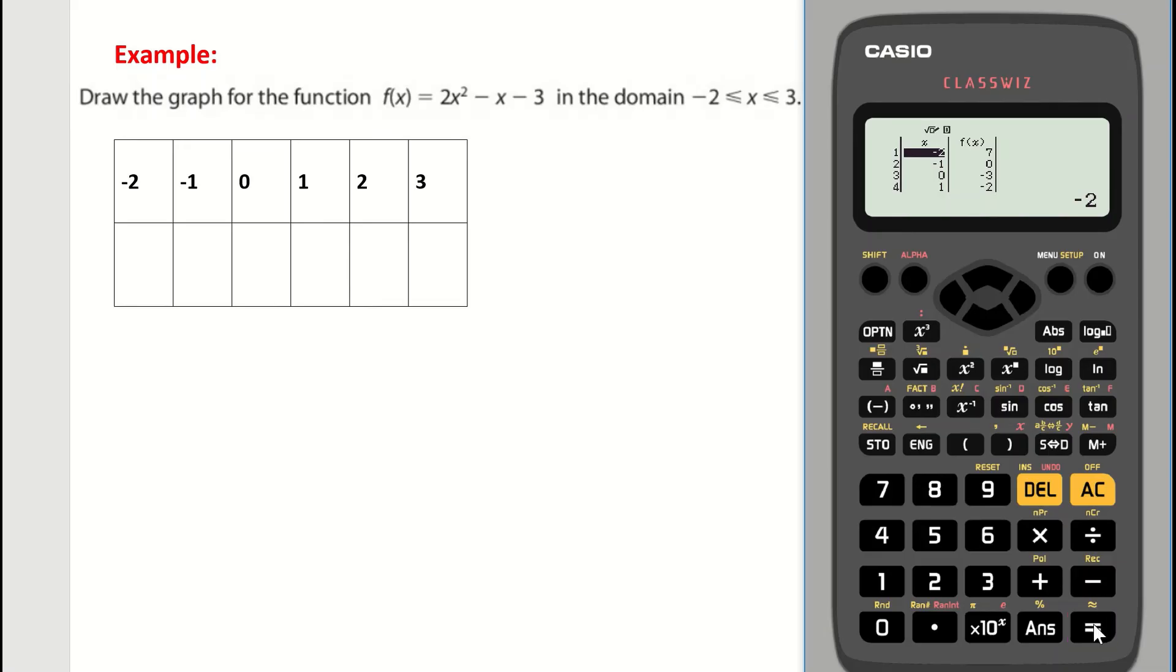So here you can see all of my answers. So my input of -2 corresponds to an output or a y value of 7. -1 corresponds to 0. 0 corresponds to -3. 1 corresponds to -2. You can see there that I'm missing the final 2 items. So what I need to do here is just arrow down on my keypad and there's my 1, my 2 and my 3. My final input. So 3 is corresponding to a value of 12.